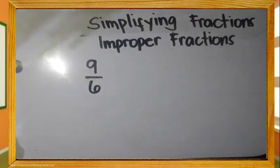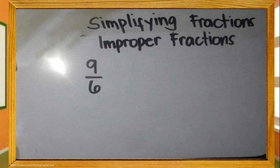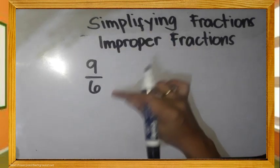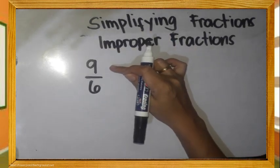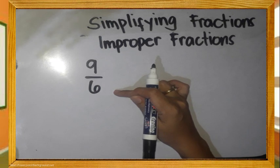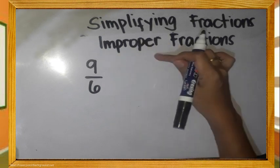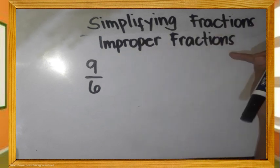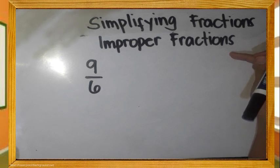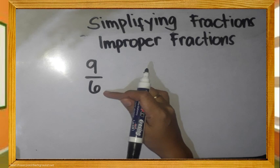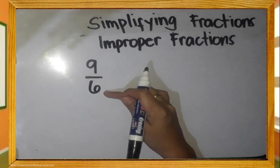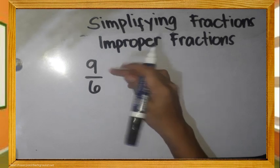Simplifying improper fractions. Paano natin masasabi na isang fraction ay improper fraction? Tignan ang ating fraction. Mas malaki ang numerator kumpara sa denominator. Kaya, ito ay tinatawag na improper fraction. Paano natin isisimplify ito? I-divide ang denominator sa numerator.